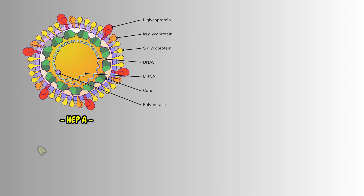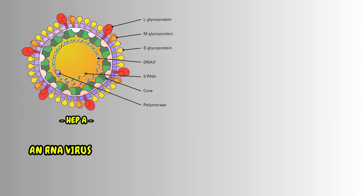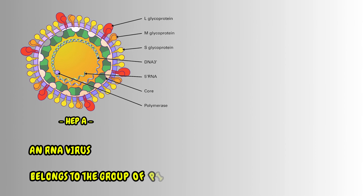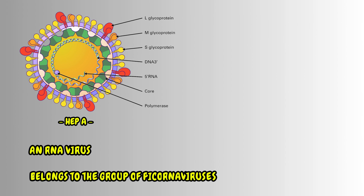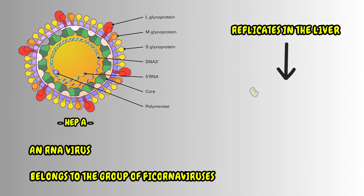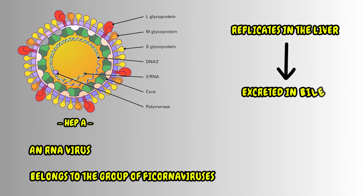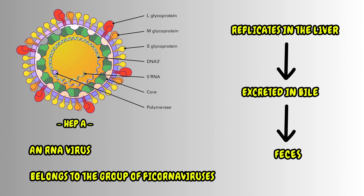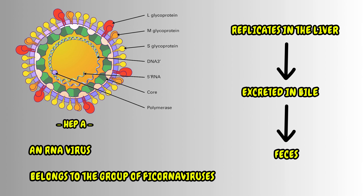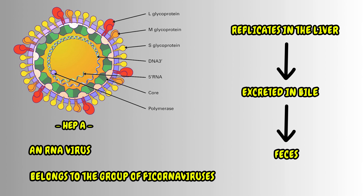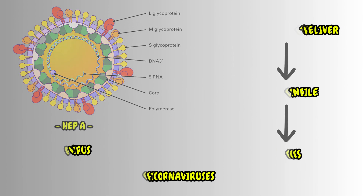Hepatitis A is an RNA virus belonging to the group of picornaviruses. It replicates in the liver, is excreted in bile, and then excreted in the feces for about two weeks before the onset of clinical illness, and for up to seven days after.